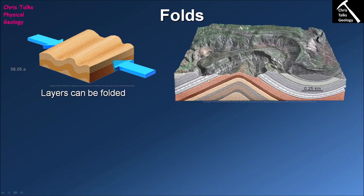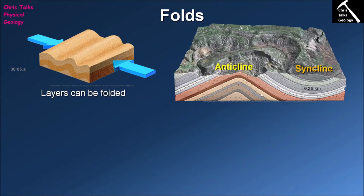Here we can see a sequence of rocks with two different types of folds. We have an arch shape where, if we track this brown layer of rock, it comes up and then comes down — this is defined as an anticline. In an anticline, the oldest rocks are located in the core and the youngest rocks are on the outer edge, based on the principle of superposition.